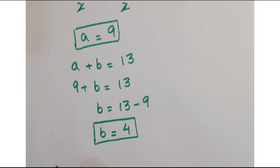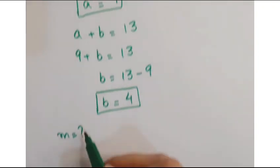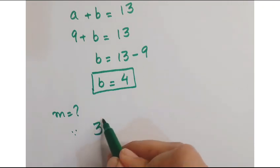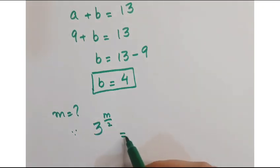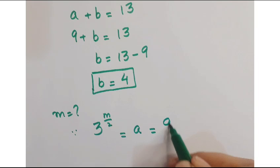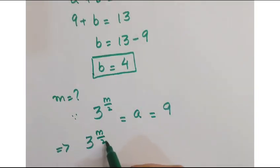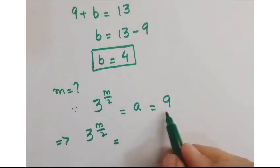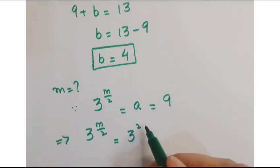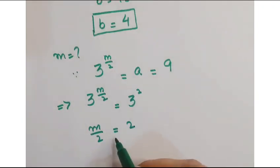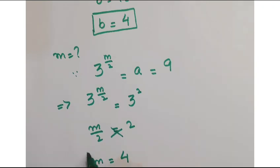Now, we have to find m. For evaluating m, as we assume that 3 to the power m upon 2 is equal to a which is equal to 9. Now, this implies you can write this as 3 raised to the power m upon 2 and 9 can be written as 3 square. We have the same basis. So just equate their exponents. Now, by cross-multiplication, you get m is equal to 4.